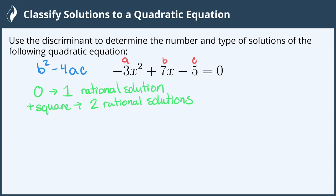If we get a positive number but it is not a perfect square, this gives us two irrational solutions.